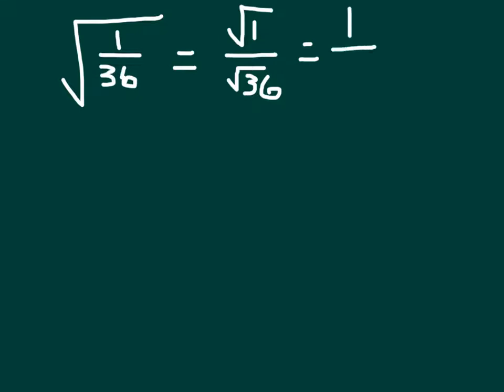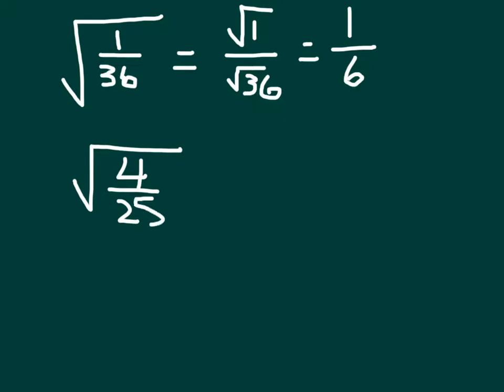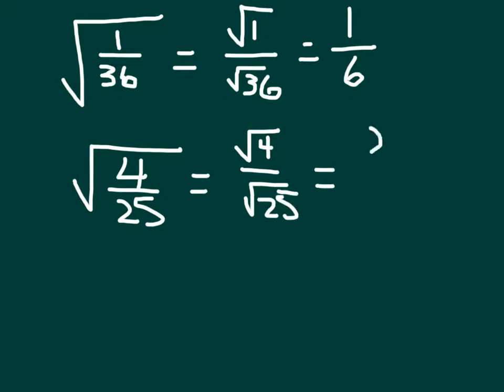And the square root of the denominator — the square root of 36 is 6. So the square root of 1 over 36 is 1 over 6. One more example: the square root of 4/25 is equal to the square root of 4 over the square root of 25. The square root of 4 is 2, and the square root of 25 is 5, so our answer is 2 fifths.